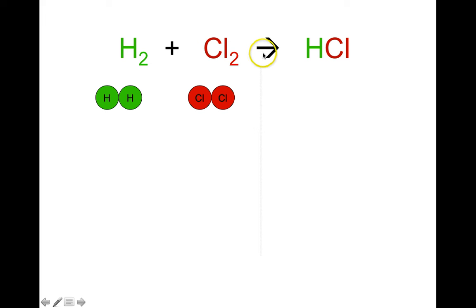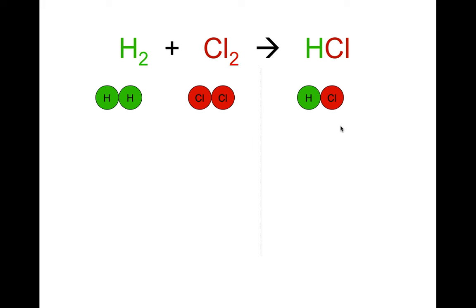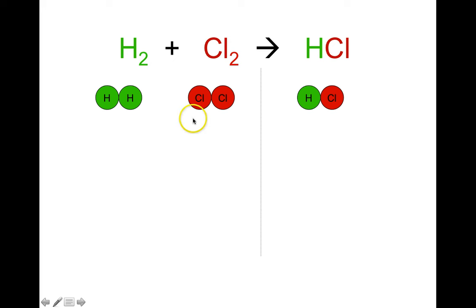Over here we have the arrow, which means yield, so we have the reaction happening. I've drawn a dashed vertical line to separate the reactants, which are over here, from the products, which are about to appear over here. The product here is H bonded to Cl. The problem is it's not balanced. According to the law of conservation of mass, if you have two atoms on the product side, there should be two atoms on the reactant side. On the reactant side for hydrogen, we have two atoms, but on the product side there's only one atom of hydrogen — it's as if a hydrogen atom has disappeared.